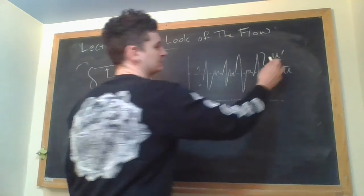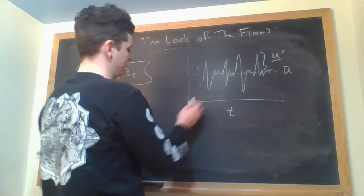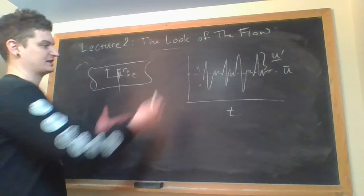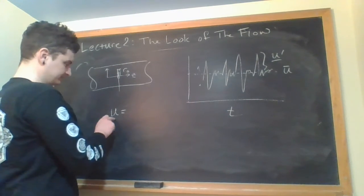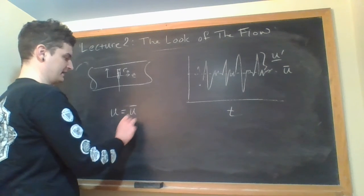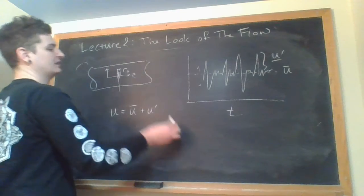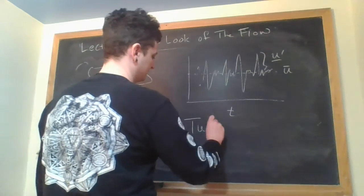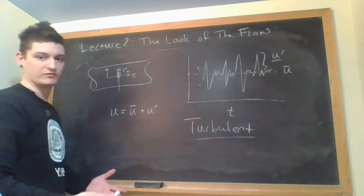We should call it a u prime. So that really then motivates this idea of modeling turbulence where you just get a sense from looking at this thing: well I'm just gonna say that the velocity is a mean and a u prime. So this is the turbulent behavior, the turbulent look of the flow.